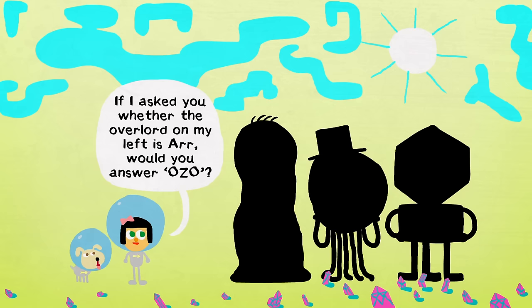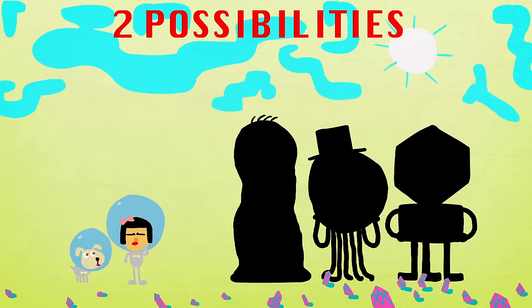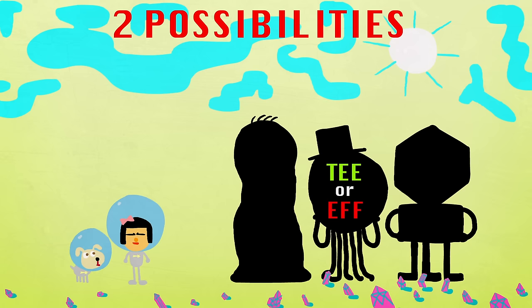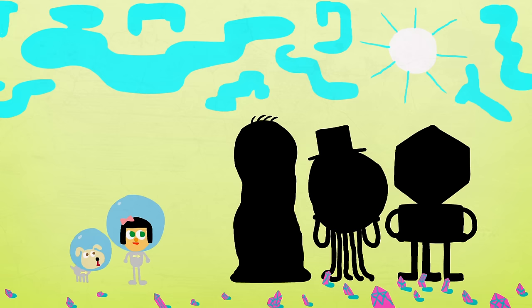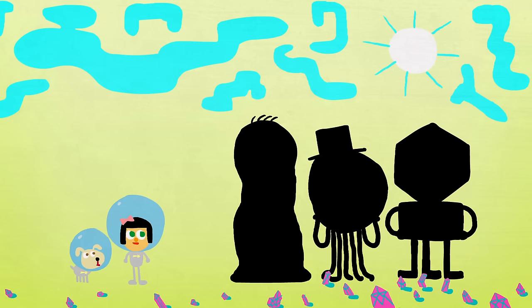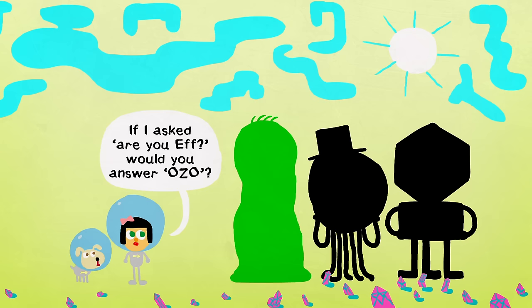Ask the alien in the middle. If I asked you whether the overlord on my left is R, would you answer ozo? If the reply is ozo, there are two possibilities. You could already be talking to R, in which case the answer is meaningless. But otherwise, you're talking to either T or F. And as we know, getting ozo from either one means your hypothetical question was correct, and the left overlord is indeed R. Either way, you can be sure the alien on the right is not R. Similarly, if the answer is ulu, then you know the alien on the left can't be R.